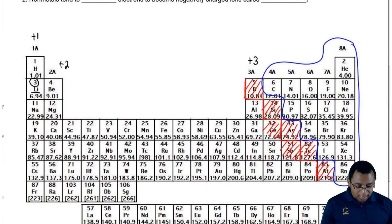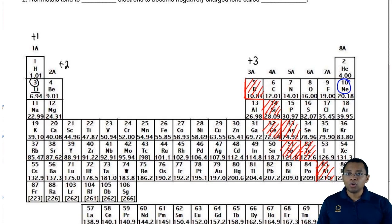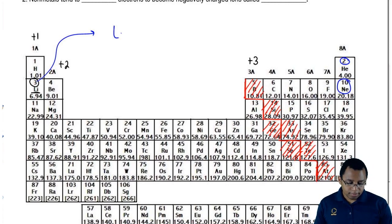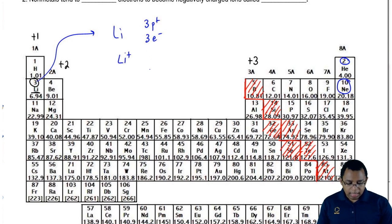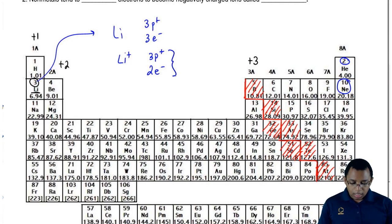Lithium wants to become just like a noble gas — a group 8A element. It has two choices: gain seven electrons to become like neon, which is very unlikely, or lose just one electron to become like helium. You always go the shortest distance to a noble gas. So neutral lithium has three protons and three electrons. When it loses one electron, it has two electrons but still three protons, giving it a net plus one charge because there are more positives than negatives.